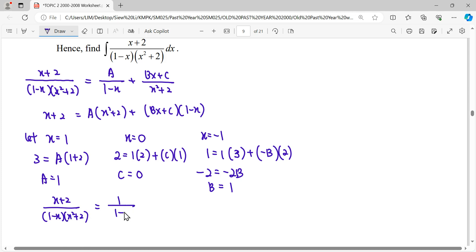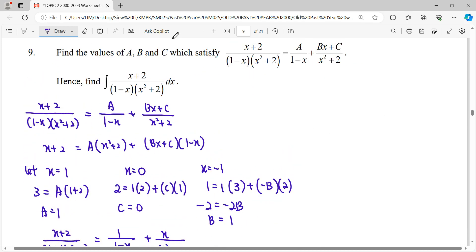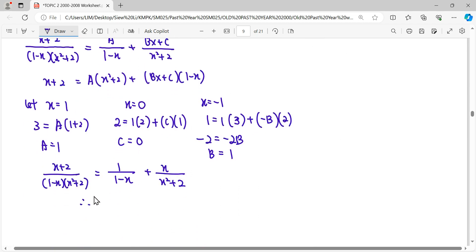Where A is 1, B is 1, C is 0. Therefore we answer the question. The value of A is 1, B is 1, C is 0.